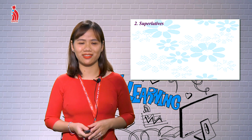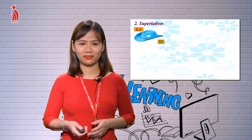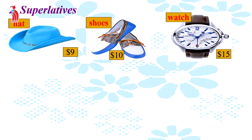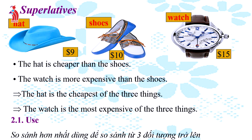Now let's come to the second type of comparison: superlative. Look at the examples. 'The hat is cheaper than the shoes,' 'The watch is more expensive than the shoes.' From this, we can say: 'The hat is the cheapest of the three things' or 'The watch is the most expensive of the three things.' So the superlative is used to compare three or more objects.